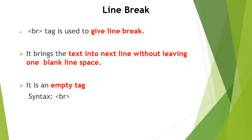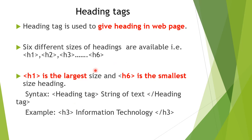The next tag is the line break tag. The BR tag is used to give a line break — it brings the text to the next line without leaving one blank line space. This is the difference between BR and P tag: P tag also brings text to the next line but also leaves one blank line space above and below. BR is an empty tag, meaning it has only an opening tag.